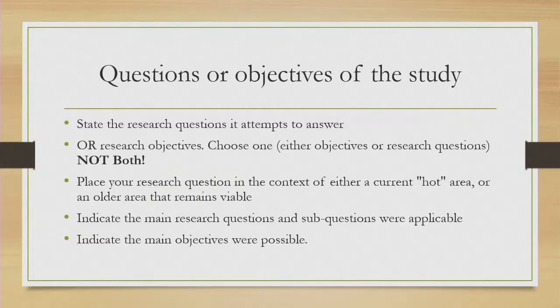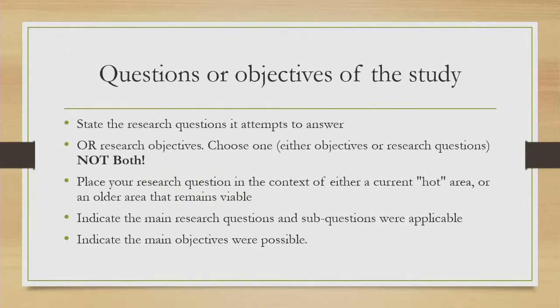Place your research question in the context of either a current hot area or an older area that remains viable. Sometimes you are curious about specific ideas — what is trending, what is the current situation. Indicate the main research questions and sub-questions where applicable. I always advise students to have a maximum of three questions. If you have main questions, maybe have two main questions and for your project perhaps three or four sub-questions. Don't have too many research questions — it makes the study vague because you need to be specific.